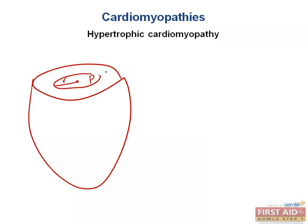We have our radius, pressure, our wall tension which is sigma, and then we have our wall thickness which is n. We know our equation: wall tension is equal to the pressure within the chamber times the radius of the chamber divided by the wall thickness. The law of Laplace tells us that an increase in wall tension can be due to an increase in ventricular chamber pressure or radius, or due to a decrease in the wall thickness.